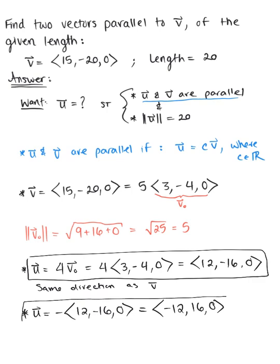So both of these vectors U are parallel to V with a magnitude of 20, and the second vector here is in the opposite direction as V.